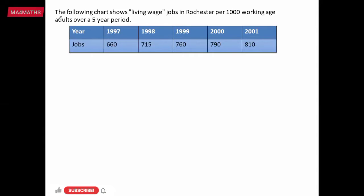The following chart shows living wage jobs in Rochester per 1000 working age adults over a 5-year period. We have a 5-year period and the number of jobs.